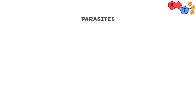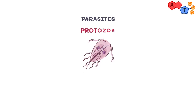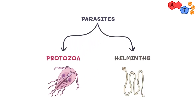Assalamu alaikum everyone, welcome again to another ATP video. If you still remember from our previous videos, we talked about parasites. We focused mainly on protozoa in that video. Today inshallah we will talk about another category related to parasites, which is helminths. Parasites can be categorized into two main groups: protozoa and helminths. Previously we talked about protozoa, and today we'll be talking about the helminths.